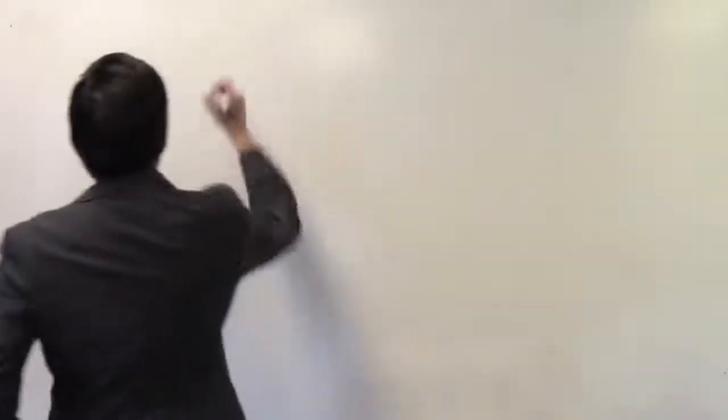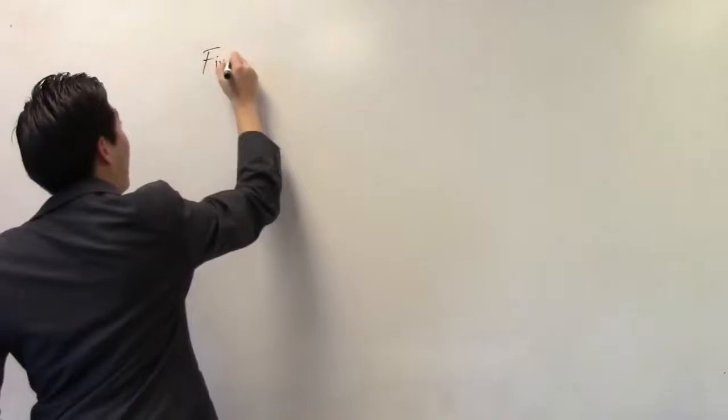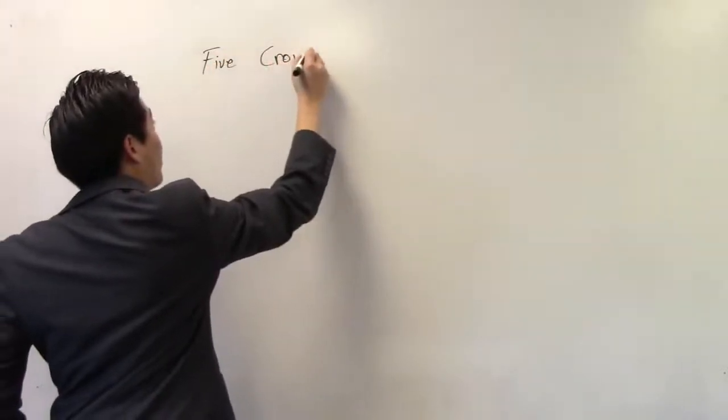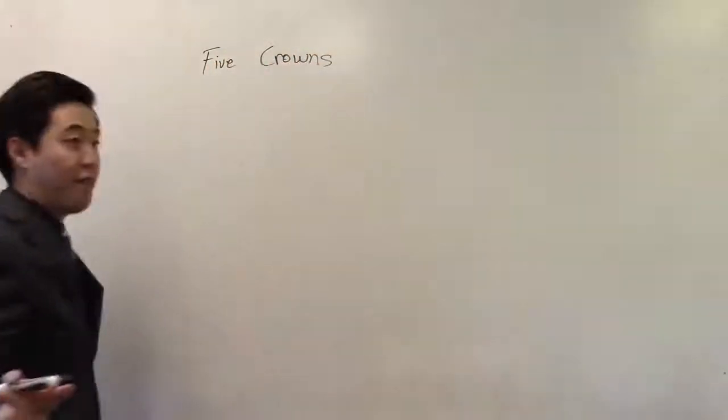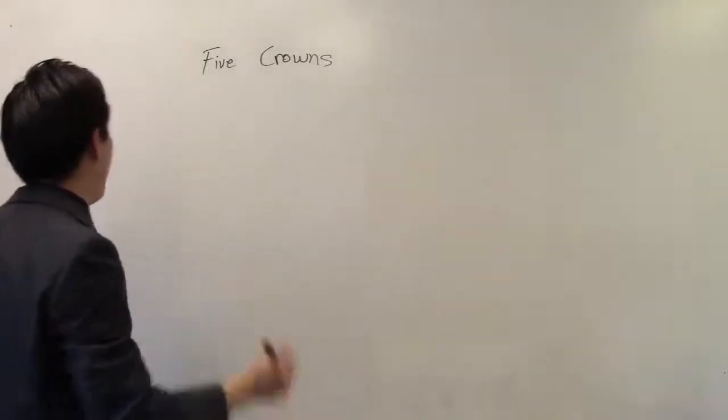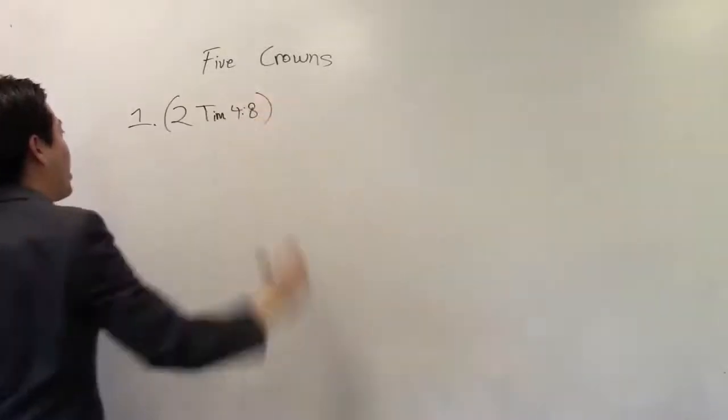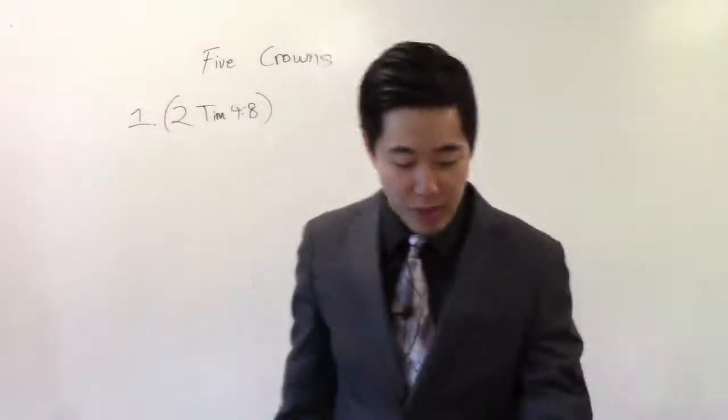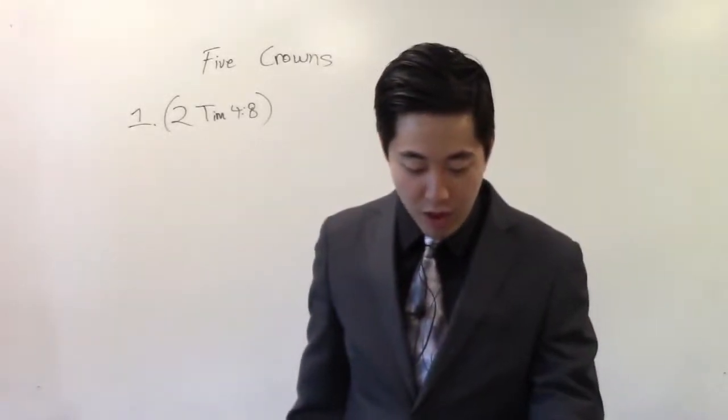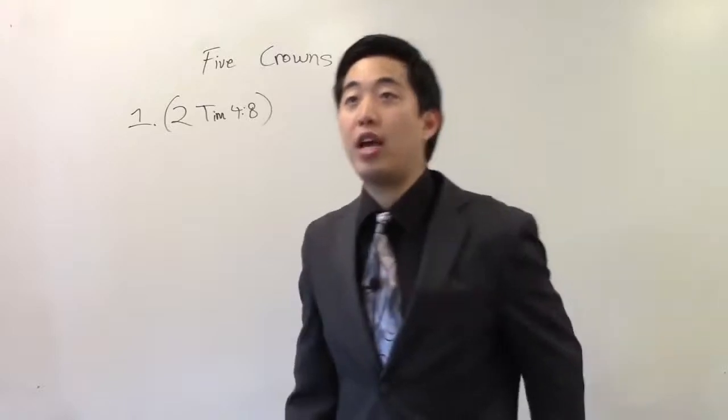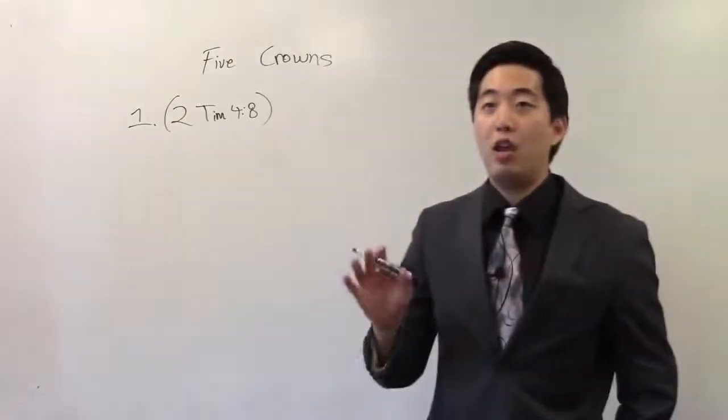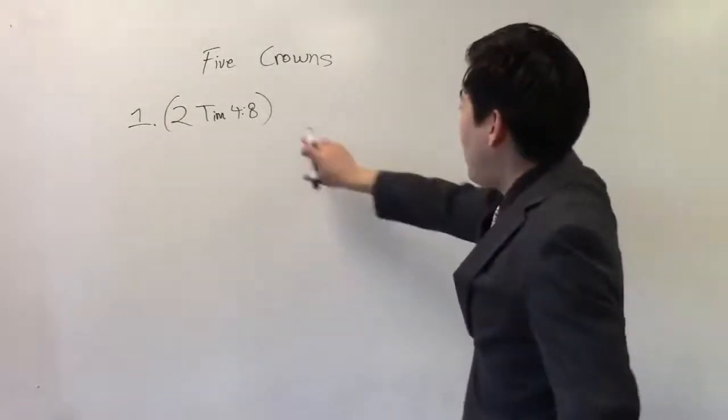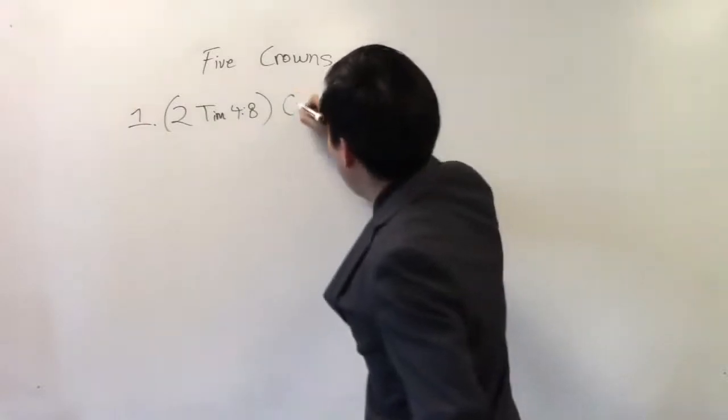Look at 2nd Timothy chapter 4 and verse 8. Yes, it is true. There are different crowns. You know how many crowns there are in the Bible? Five crowns. Didn't you know that a Christian is going to have five crowns? What are those five crowns? The first one, the Bible says, Henceforth there is laid up for me a crown of righteousness, whom the Lord the righteous judge will give me at that day, and not to me only, but also all them that love his appearing.